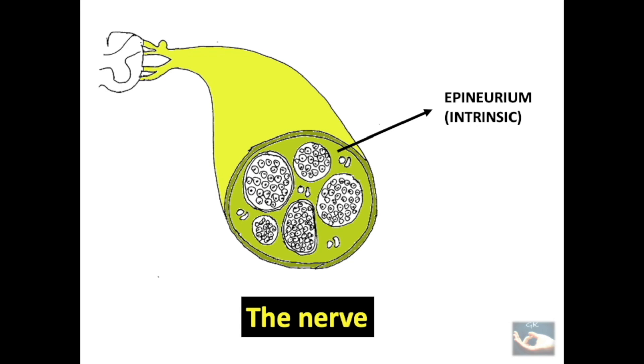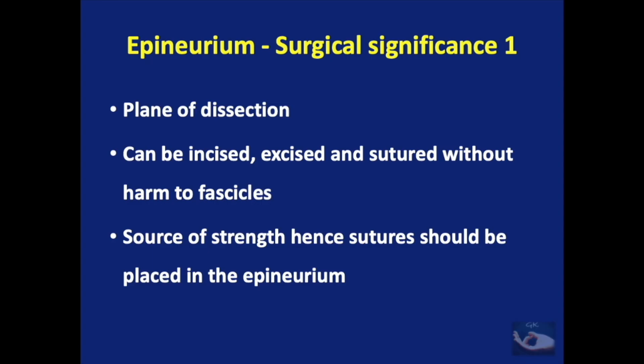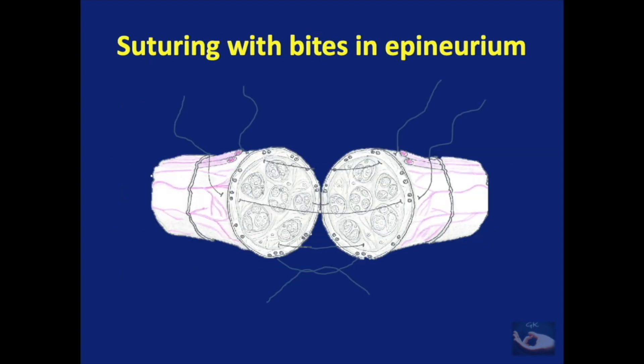So the epineurium is a condensation of the loose connective tissues that surround the perineural ensheatment of the fascicles. It is the plane of dissection in which the nerve can be dissected. This epineurium can be incised, excised and sutured without causing harm to the fascicles and the source of strength of any suture is this epineurium.